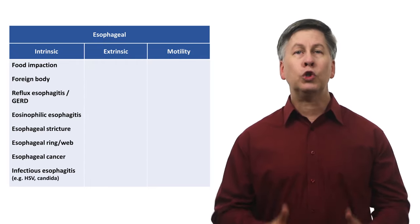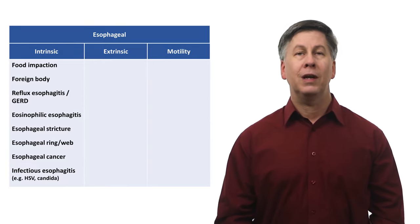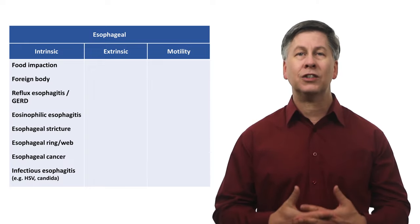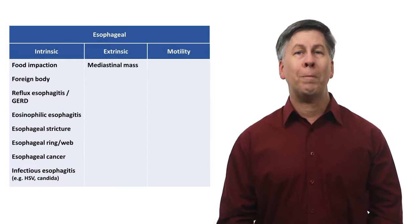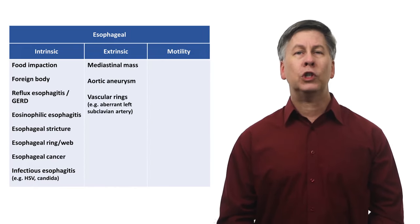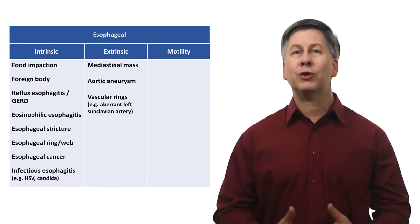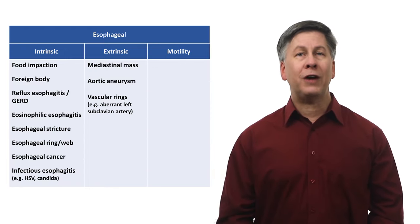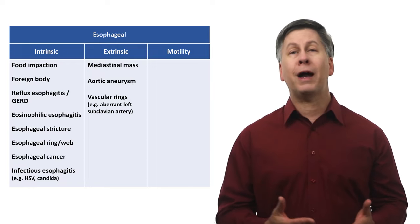In the extrinsic category are the pathologies which cause dysphagia by compressing the esophagus from the outside. This includes mediastinal masses, such as tumors or massive lymphadenopathy, aortic aneurysms, and something called a vascular ring, which is a congenital abnormality in which one or more great vessels completely surrounds either the trachea or esophagus, or most commonly both. Depending on the severity of the compression, these can present within the first several weeks of life or be asymptomatic into adulthood.